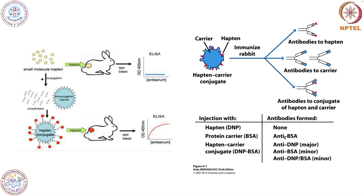Why is hapten so important? It is very important in order to develop diagnostics — for example, the estimation of vitamins or low molecular weight hormones in a biological sample. How will you estimate the amount of a particular small molecule? All these things are possible if you understand this hapten-carrier biology. Diagnostics use specific antibodies against these small molecules, and the antibody is generated when they are conjugated with some carrier molecule. They play a very important role in diagnostics.